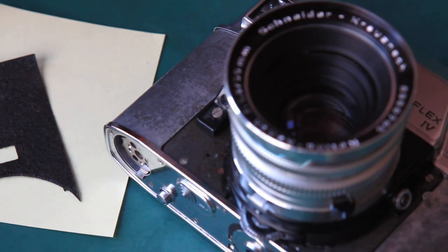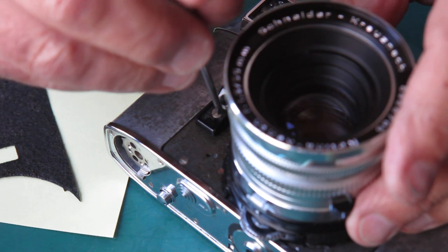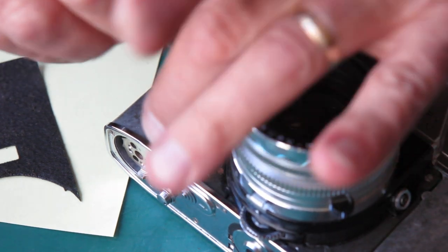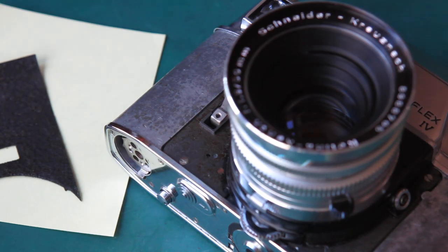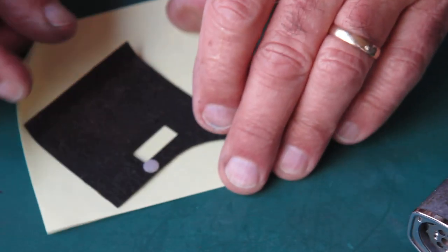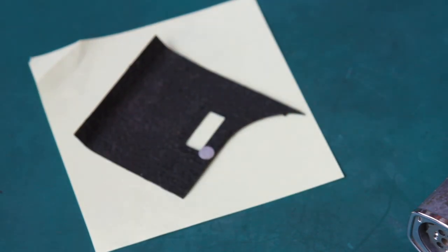Now one thing I need to do of course is remove the shutter release button because the leatherette has to go under that. Right, let's be starting with this.